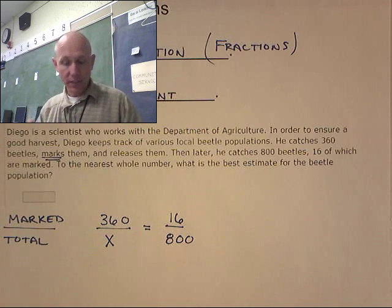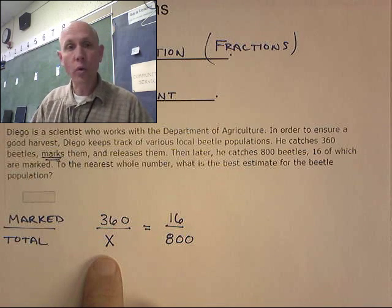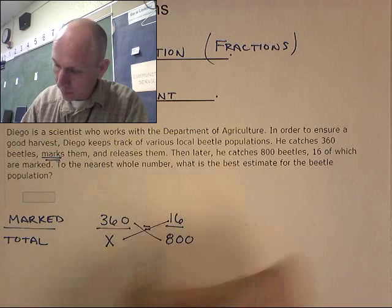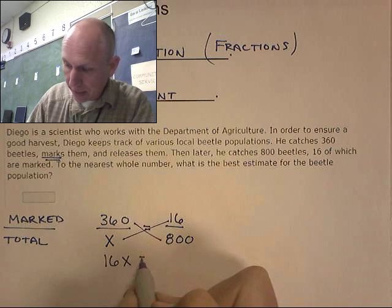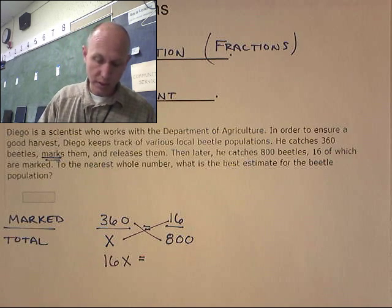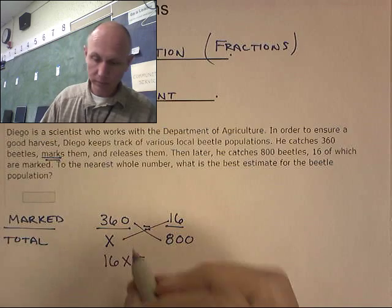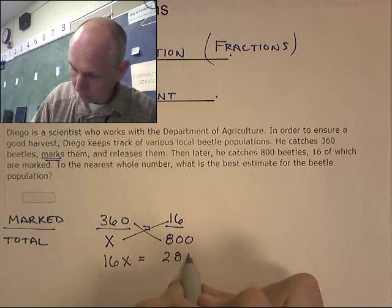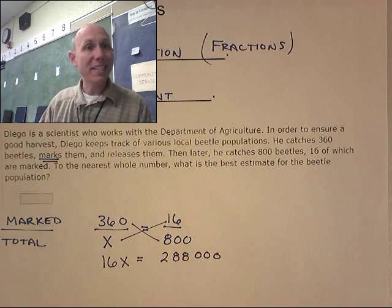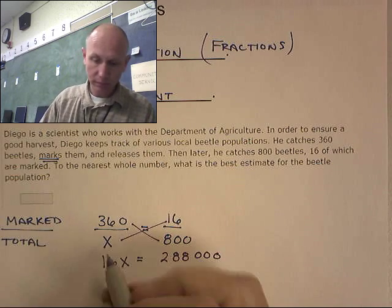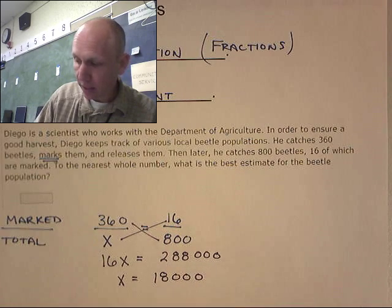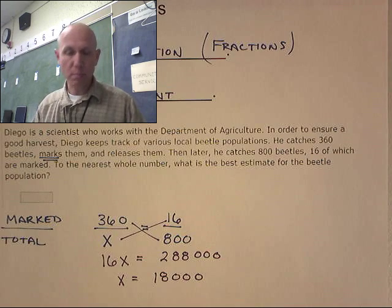Cross multiply and solve this. And that will give us our total beetle population. So, let's go like that. Cross multiplying. 16x equals 800 times 360. Then I'll divide by 16.